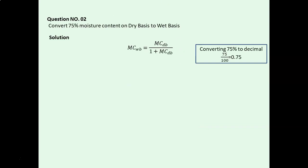And we will get MCWB equals 0.4286, and in percentage we will get it as 42.86%.